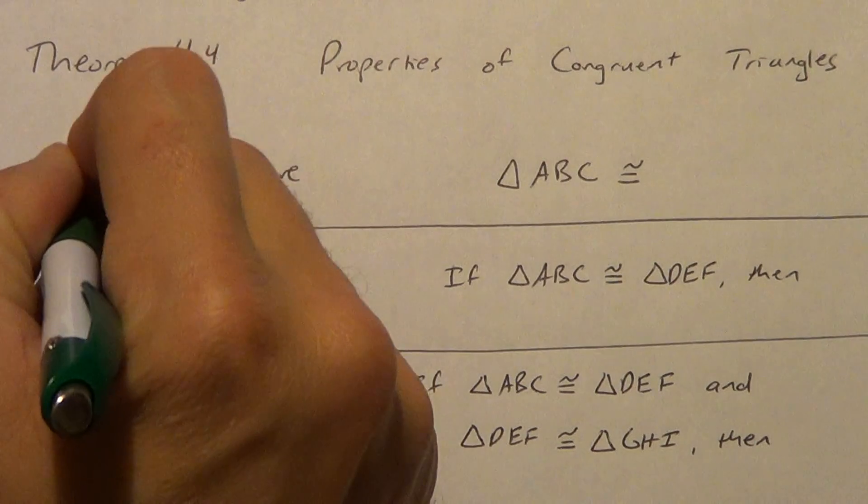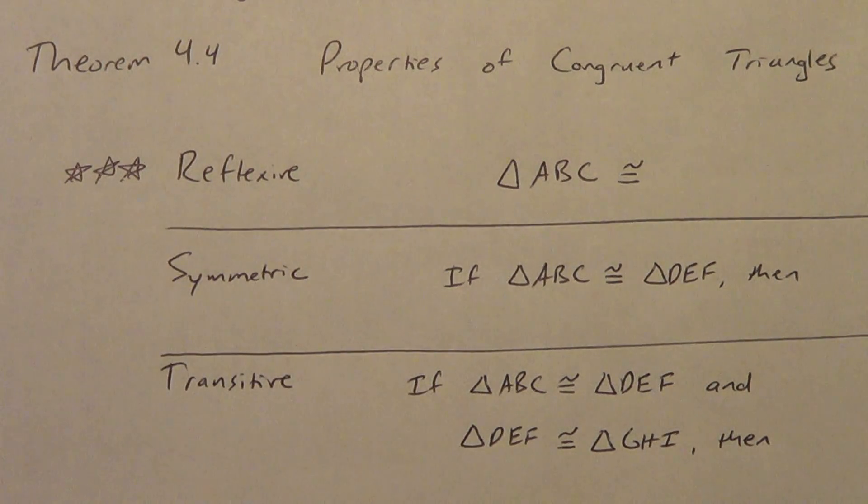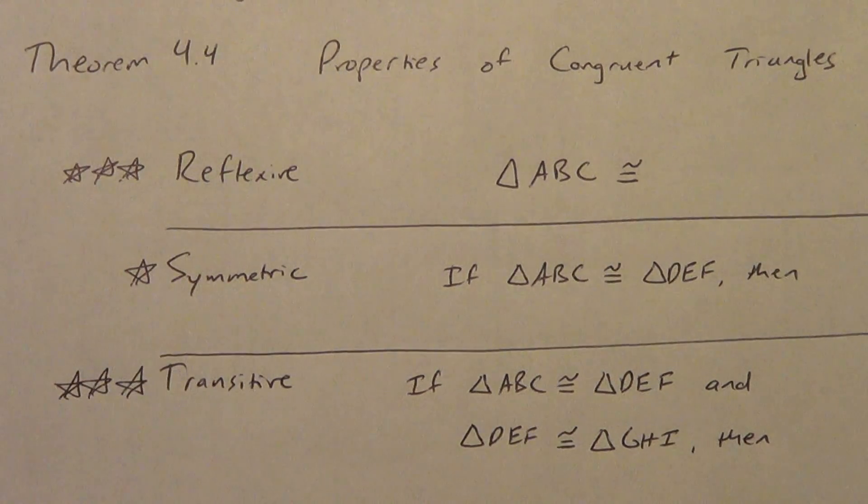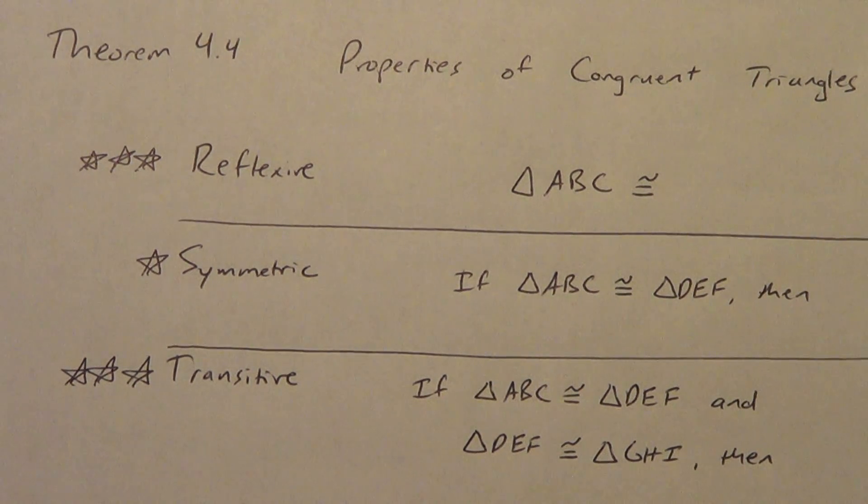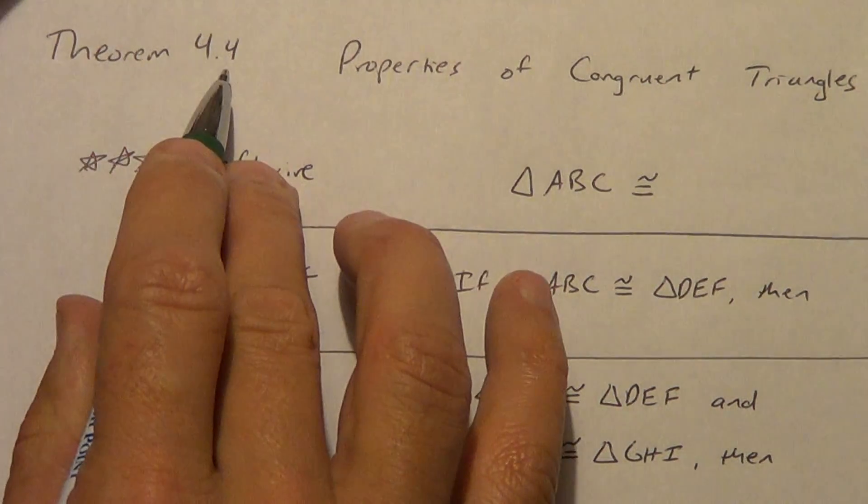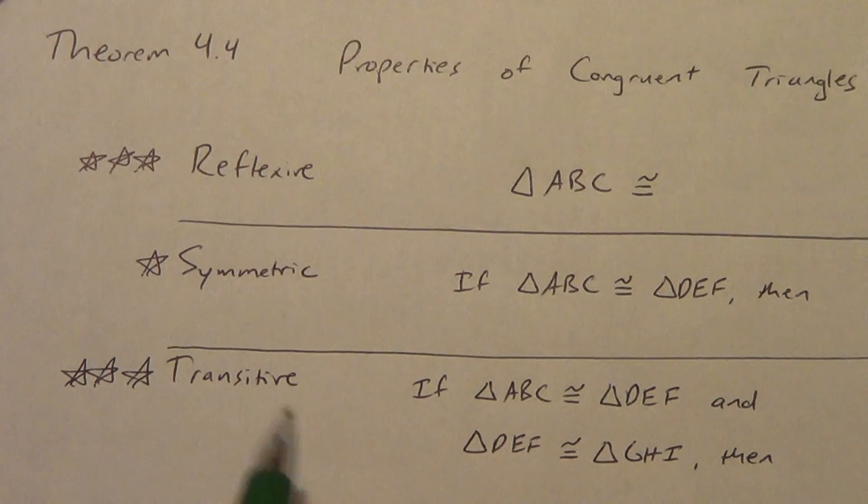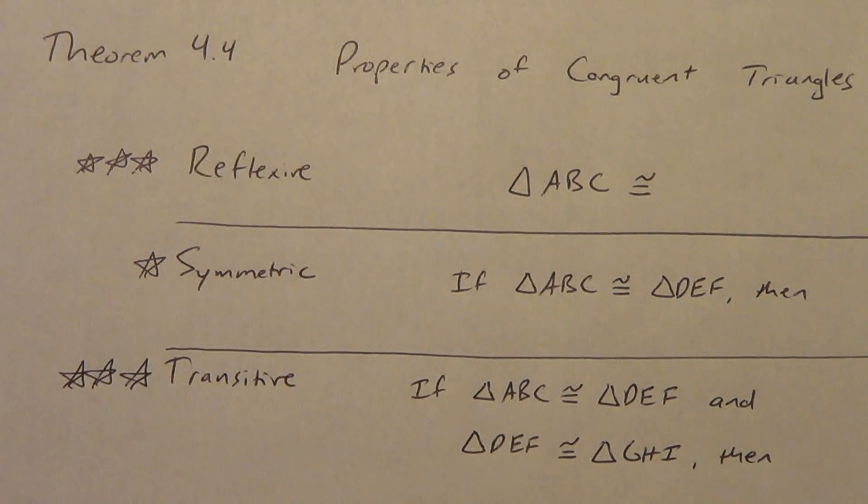So reflexive. Remember, this is very important. We use this a lot, so it's three stars. Symmetric, we don't use very often. Transitive, we use a lot. Now, we aren't going to use them a lot for triangles. We use them more for segments and for angles. But all this Theorem 4.4 says is that these three properties work for triangles. We started with having these properties for equality. Then we move to there's a theorem that says these properties work for congruent segments, and another theorem says they work for congruent angles. Now we have a theorem that says they work for congruent triangles as well. So let's review.